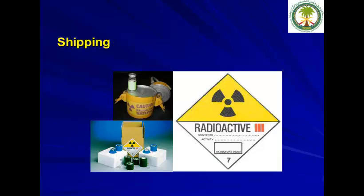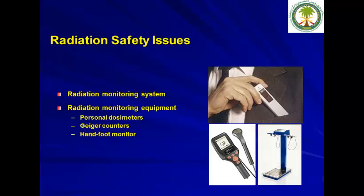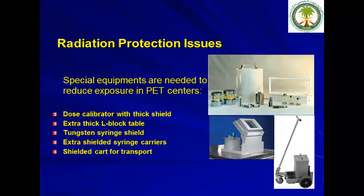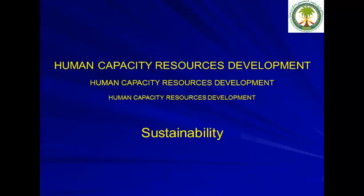For shipping radiopharmaceuticals outside your institute, you need adequate shielding and must conform to IATA regulations. You also need radiation safety measures including a monitoring system for the department, monitoring equipment for personnel, and radiation protection tools such as shielding for operators to reduce exposure.